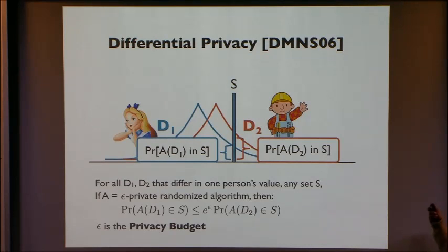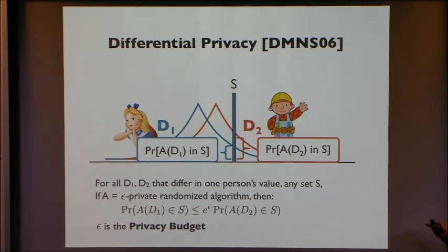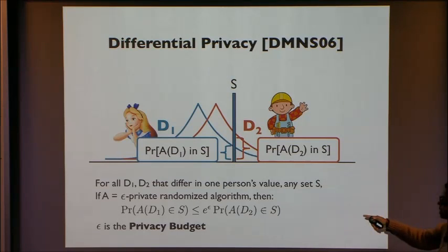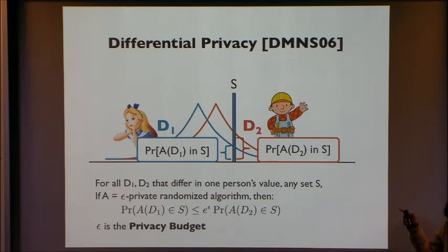Here is the definition of differential privacy — I don't really need to repeat it at this workshop. But I would like to make one quick point: I'm going to call epsilon, the privacy parameter, the privacy budget.